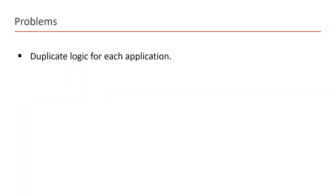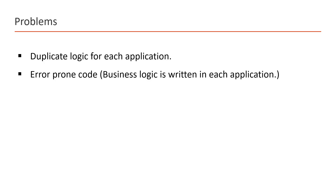The first problem is duplicate logic for each application. Remember, in all the applications we have some business logic. If you call your database directly from the website, Android application, and iOS application, then you need to write your business logic again and again, and this will duplicate your code. This also leads to error-prone code, because the business logic is written in all the applications, so there are chances you might miss some logic in some application, adding more errors to your code.